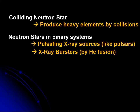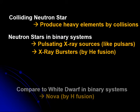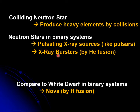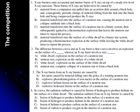In summary, neutron stars can collide and produce heavy elements. Neutron stars in binary systems can produce x-ray bursters by helium fusion, and can also produce x-ray sources when pulsating in binary systems. The x-ray burster phenomenon is an analogy to nova explosions. These are the questions corresponding to section 16 — please read them and try to answer them, as you may encounter them in the next quiz.